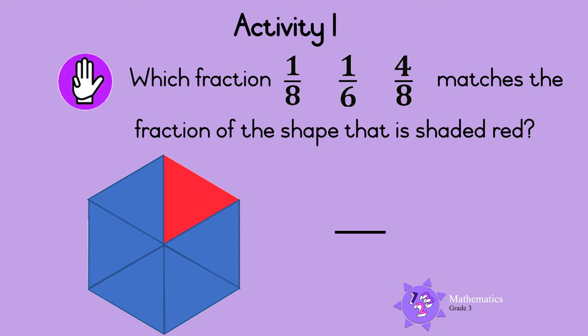Let's do this one together. Look at this shape. How many equal parts is the shape divided into? Let's count: 1, 2, 3, 4, 5, 6. So this shape is made up of 6 parts. We write the 6 at the bottom of the fraction like this.